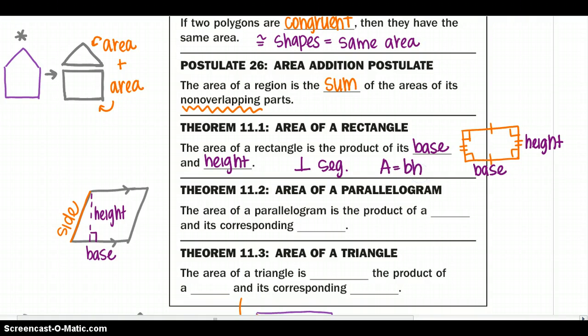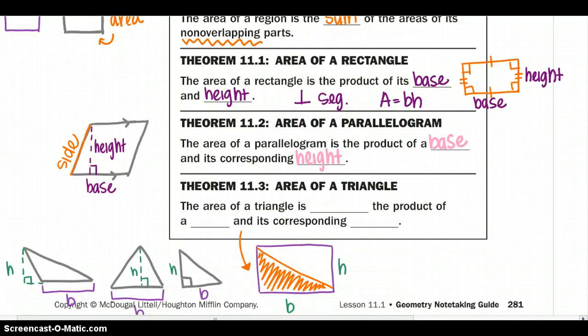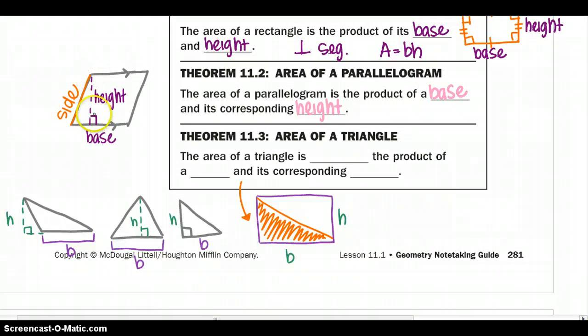Let's keep going. Theorem 11.2 talks about my area of a parallelogram. The area of a parallelogram is the product of a base and its corresponding height. Again, like we were looking back up at the top, we want to find the base and its perpendicular segment, which would be my height. My side length isn't perpendicular, and it's the longest length from both bases, so I will not use that. Look for that perpendicular height that it's created.